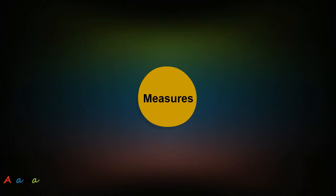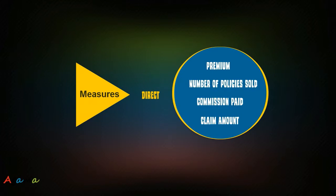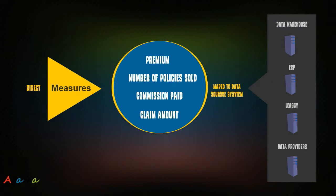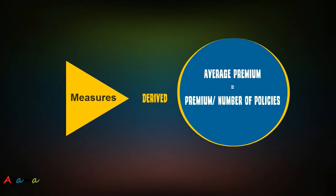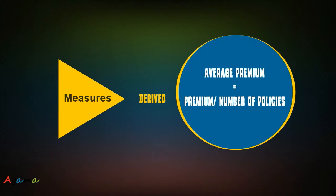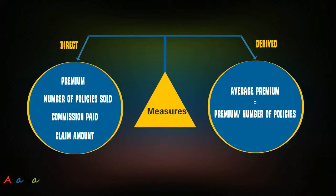Measures or facts are measurable values. Direct measures — such as premium and number of policies sold — are mapped to data source systems to extract values. Transactional data may reside in data warehouses, ERP, legacy, and third-party data provider systems. Measures can also be derived by applying formulas and/or conditions; for example, average premium is a derived measure and can be used as a metric. In summary, measures can be direct or derived.